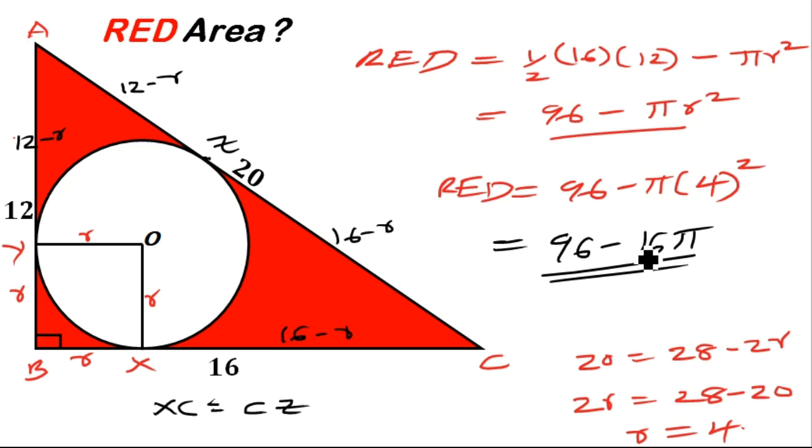So you just use the theorem of intersecting tangents, then you should be able to determine the radius of the inscribed circle, then in turn you will get the red area by subtracting the area of the inscribed circle from the area of the triangle. Thank you for watching and see you again in our next presentation. Don't forget to subscribe.